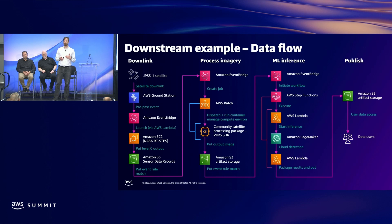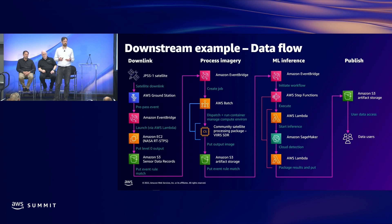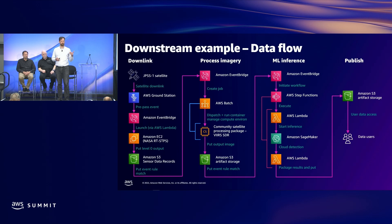The next step used AWS Batch, which spun up an EC2 instance and deployed a containerized task running CSPP VIIRS SDR and Polar2Grid — a pair of open source tools that take sensor data records from the VIIRS instrument and generate output imagery. The output product was a true-color GeoTIFF showing the area the spacecraft covered during the pass. The container wrote that GeoTIFF back to S3 when done, and Batch takes care of cleaning up the container and tearing down the compute infrastructure when no longer needed.